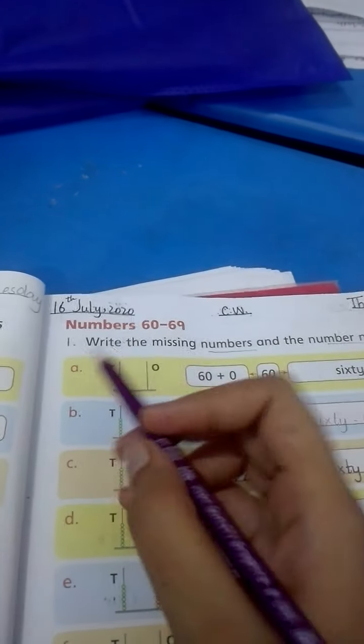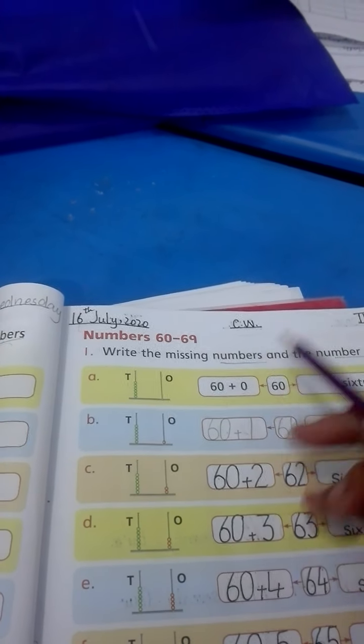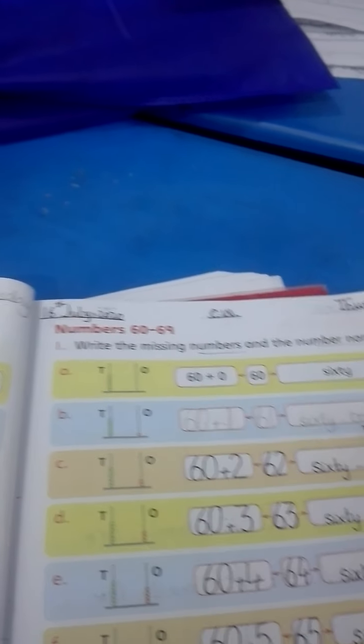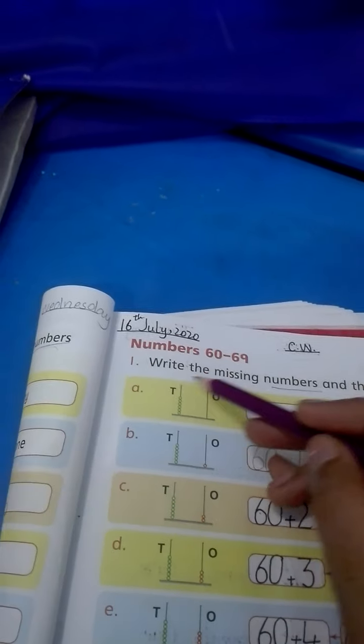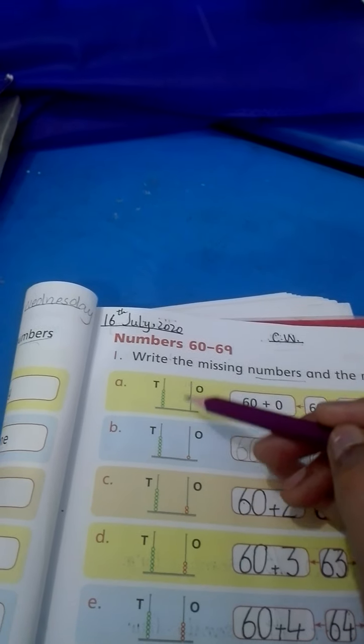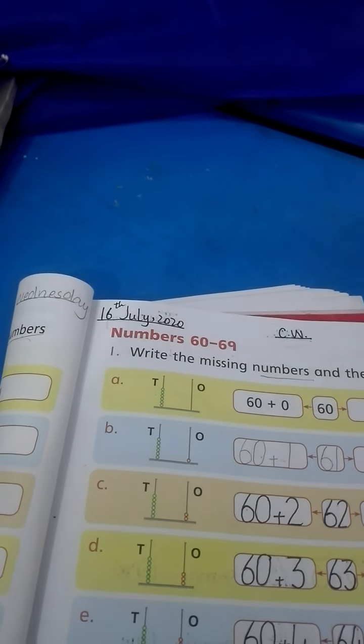Previously we counted tens and ones blocks and wrote them in numbers and then in number names, in English counting. But today we have abacus shown with beads drawn. We have to count the beads and write them in numbers and number names.